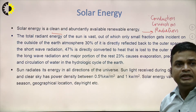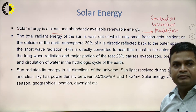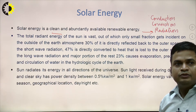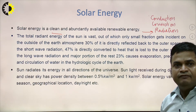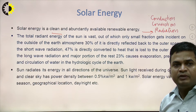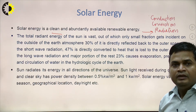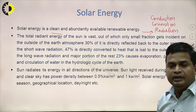The sun radiates its energy in all directions of the universe. The sun is assumed to be a spherical body, so energy is radiated in all directions — x, y, z. Sunlight received during daytime with a clear sky has a power density between 0.5 kilowatt per meter squared and 1 kilowatt per meter squared. Solar energy varies with season, geographical location, and daylight.